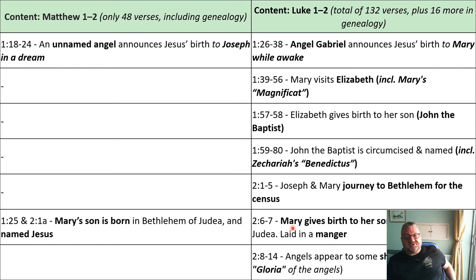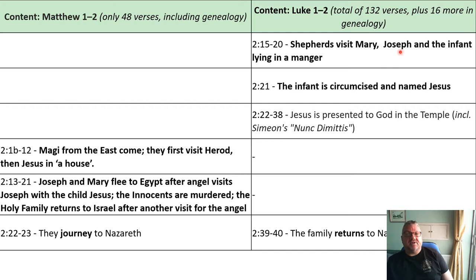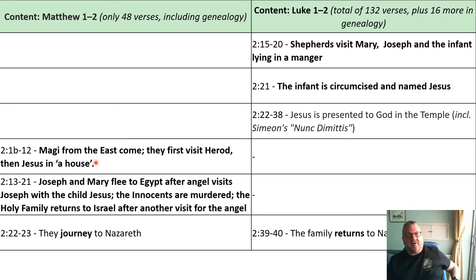In Matthew, Mary's son is born in Bethlehem and named Jesus in a house. In Luke, Mary gives birth in Bethlehem and the child is laid in a manger. Angels appear to shepherds who sing the Gloria; the shepherds visit Mary, Joseph, and the infant. In Luke, the infant is circumcised and named Jesus, then presented to God in the temple, where Simeon — who had been told he would see the Messiah before he died — sings the Nunc Dimittis: 'Lord, now let thy servant depart in peace according to thy word.' Luke's gospel finishes with the family returning to Nazareth.